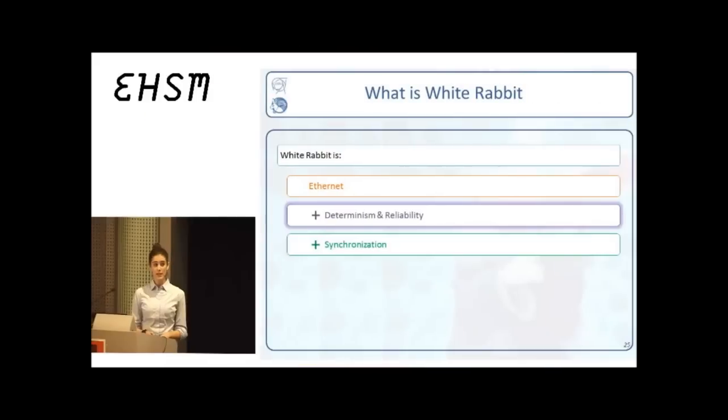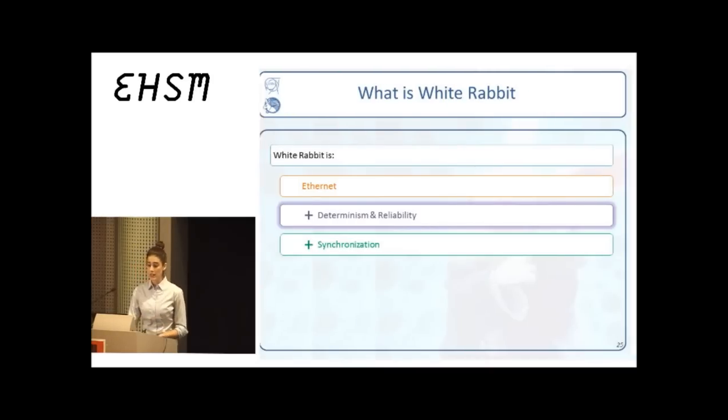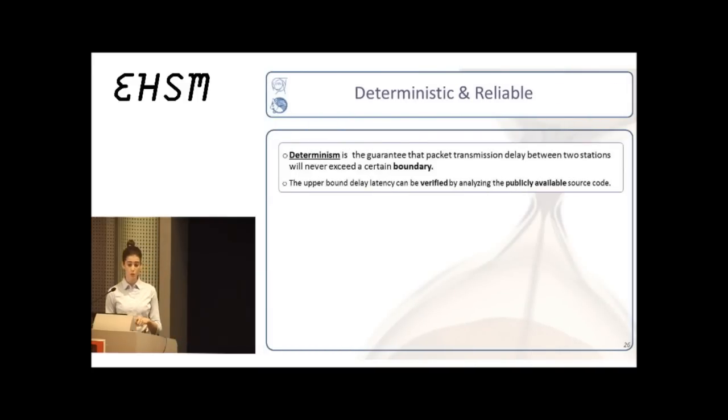And White Rabbit supports deterministic and reliable delivery of those Ethernet packets. Starting with determinism, this is a warranty that the transmission delay of a packet from its source to its destination will not exceed a certain boundary, regardless of the amount of switches it has to traverse or the traffic in the network. This upper bound depends on the exact network topology. And for White Rabbit, it can be verified and analyzed by seeing the publicly available source code.